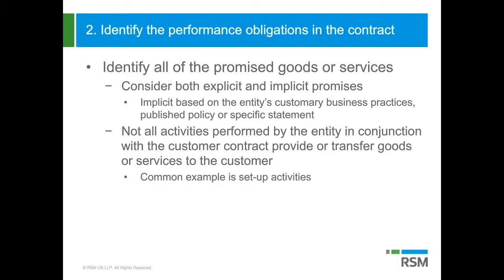The first step in identifying these performance obligations in the contract is to identify all of the promised goods or services in the contract. Then you determine whether those promised goods or services represent performance obligations, and to do that, you've got to consider both explicit and implicit obligations.